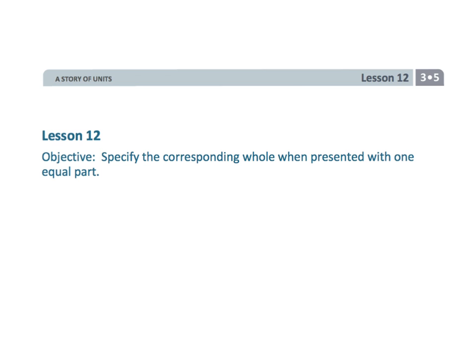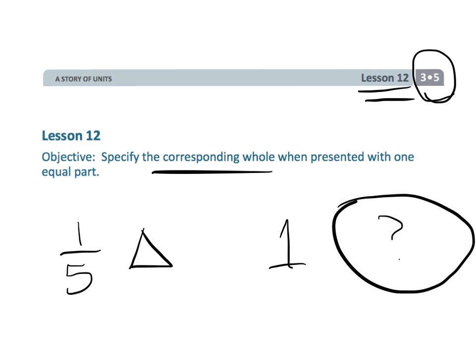And that wraps up grade three module five lesson 12 where students are given a fraction and then they're told to draw a picture of what one whole would look like.